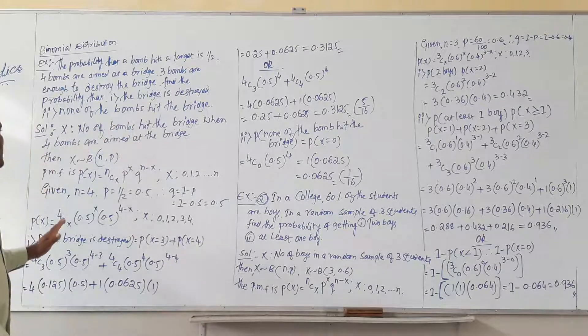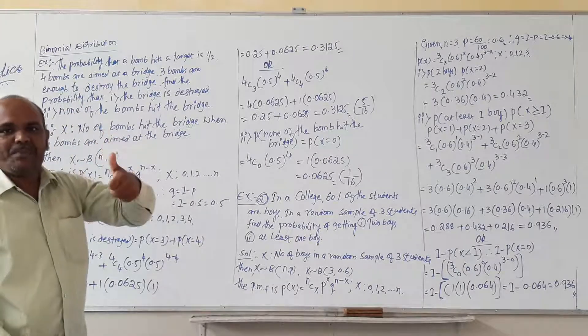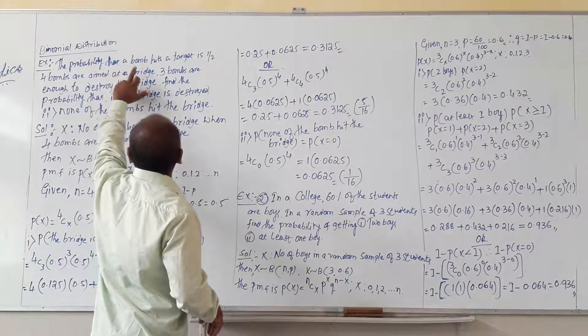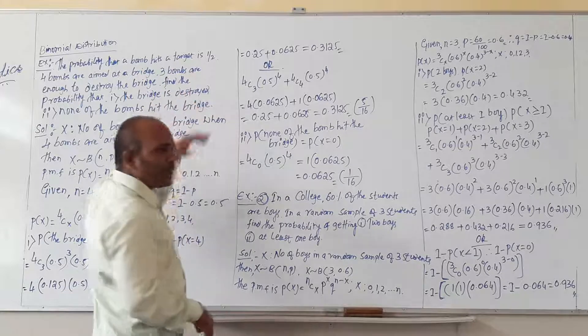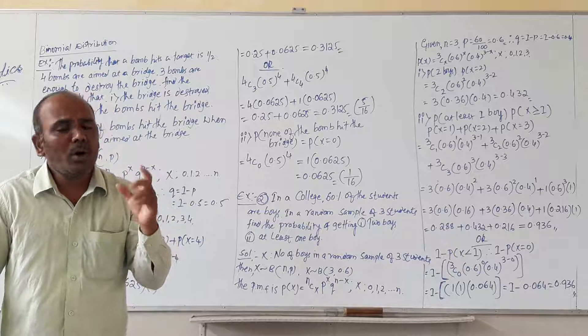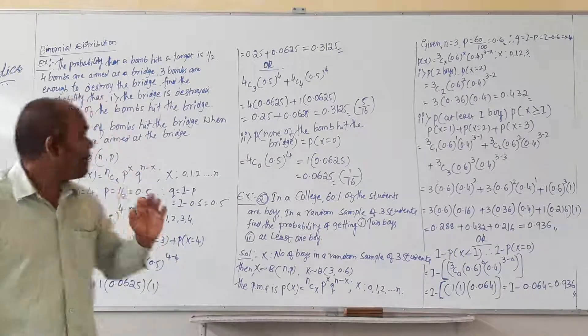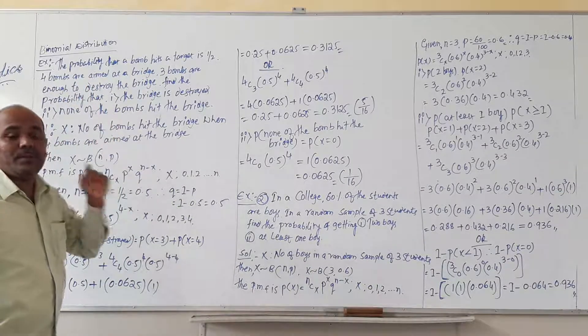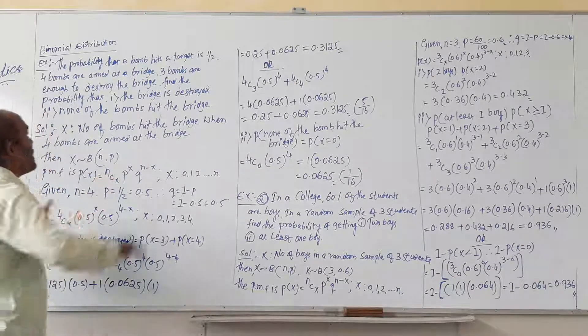This is the question. First we have to identify the value of p and small n value. Here they given the probability that a bomb hits a target is 1 by 2. It means the p value is 1 by 2 or you can also divide it, 1 by 2, then you will get 0.5.